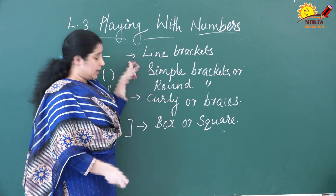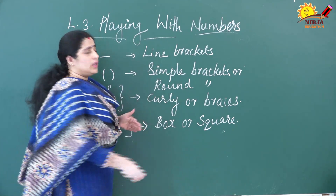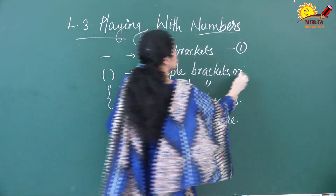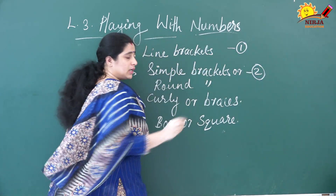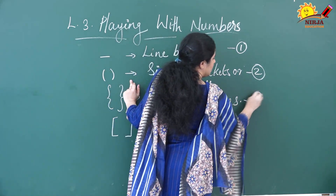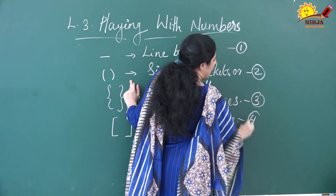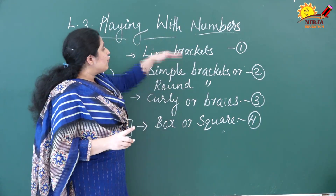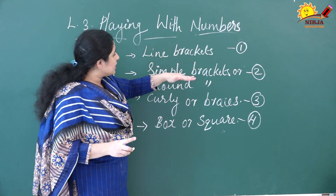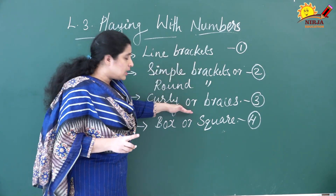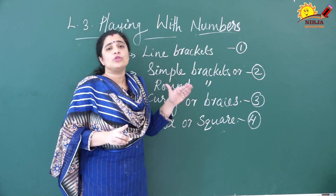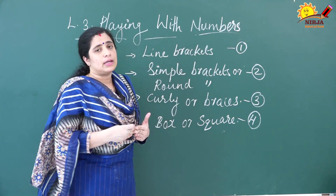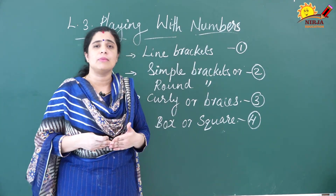When you have different types of brackets in a problem, there is a specific order to solve them. First you have to open the line bracket, second the round bracket, third the curly bracket, and fourth the square bracket. I will repeat: first line bracket, then simple bracket, then curly, and last the square bracket. This is the order. Now we will discuss this with some examples.